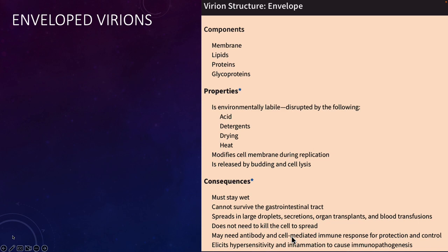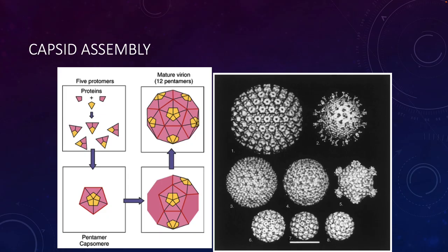Because enveloped viruses can spread without killing the host cell — especially if they bud off — it may be really important to have a cell-mediated immune response to kill infected cells. These viruses will also generally elicit a type of hypersensitivity and inflammation that causes immunopathogenesis, because the host cell membrane is part of the envelope.